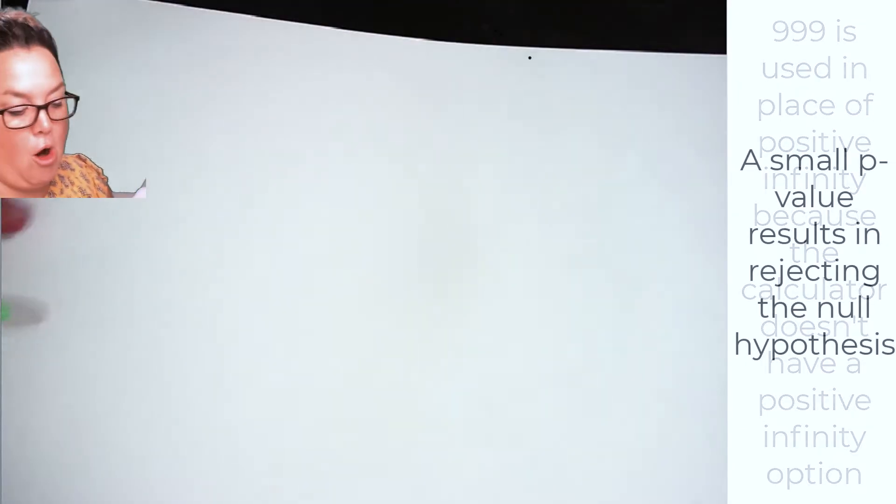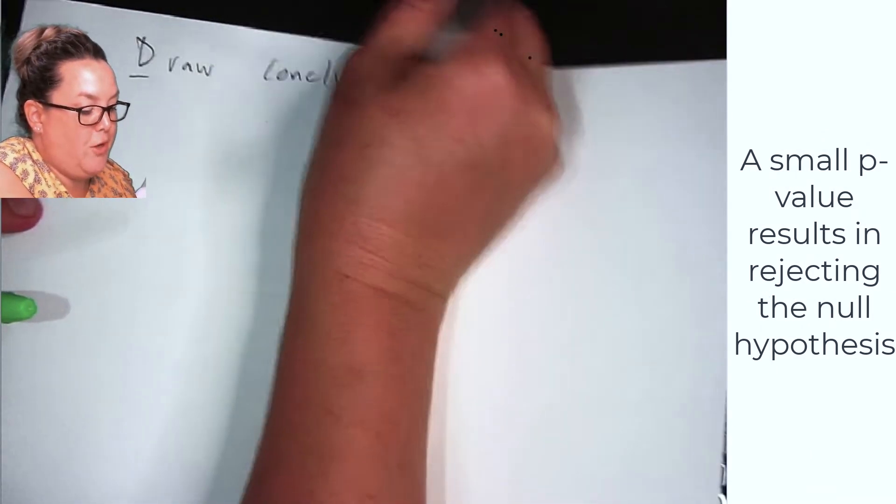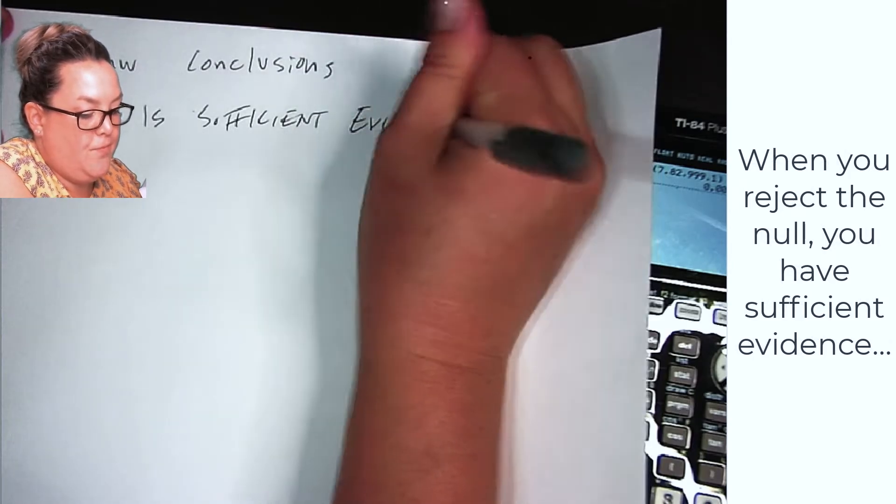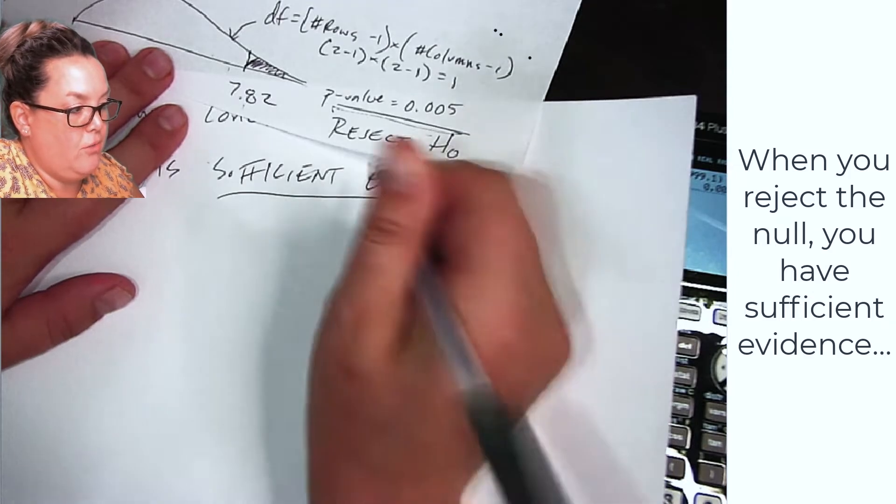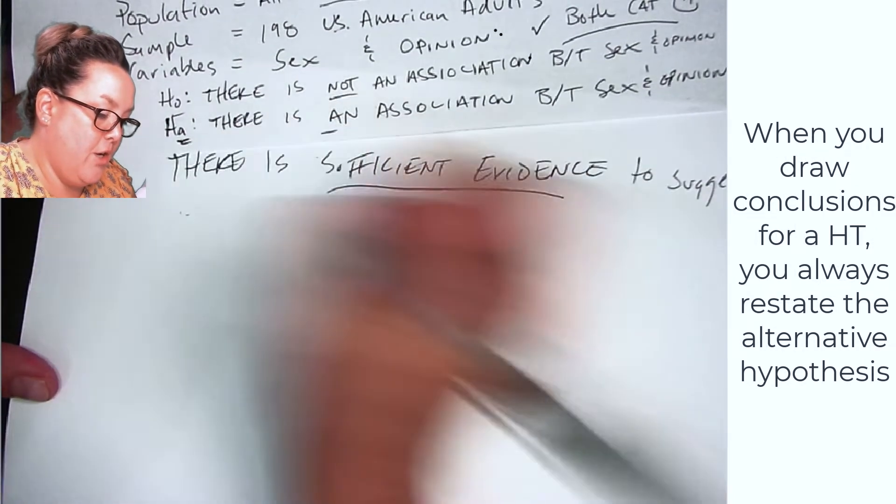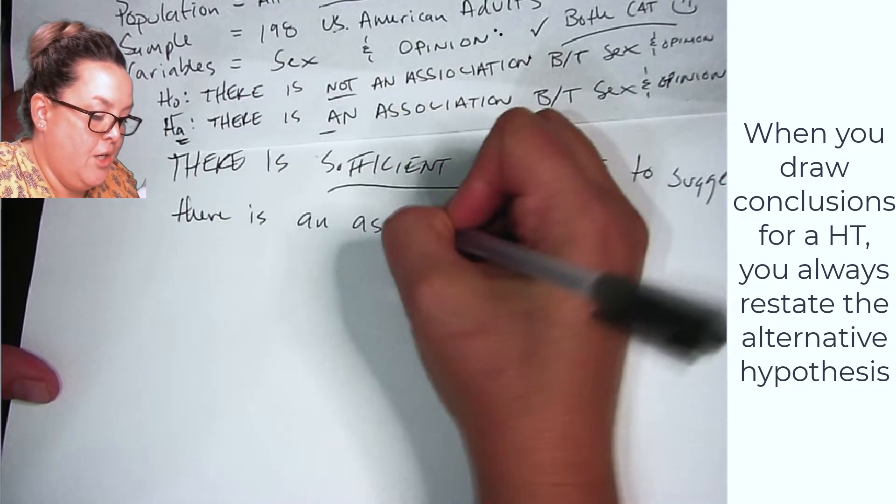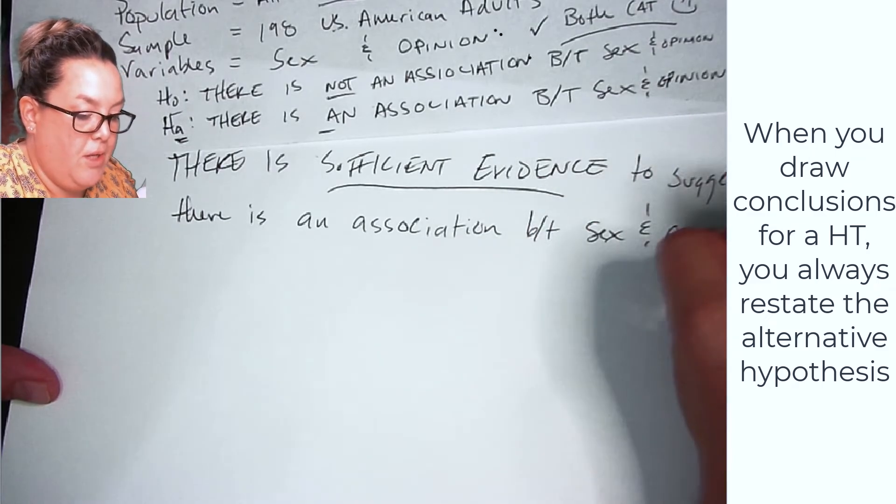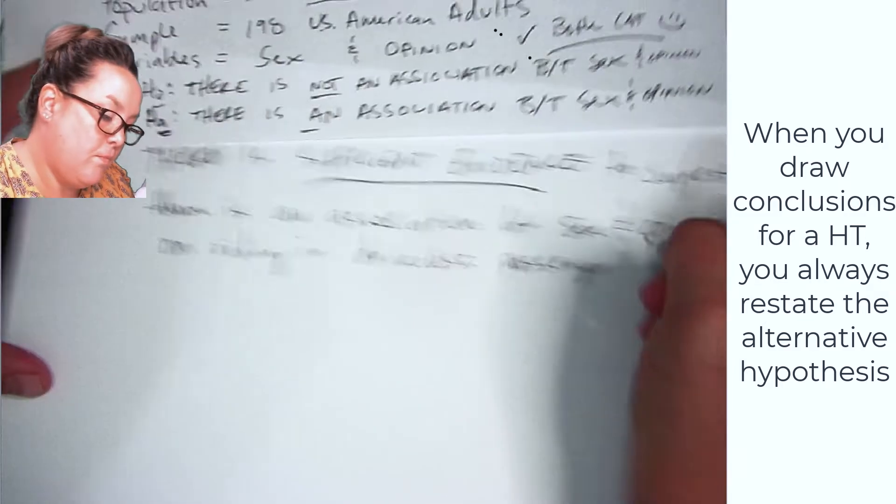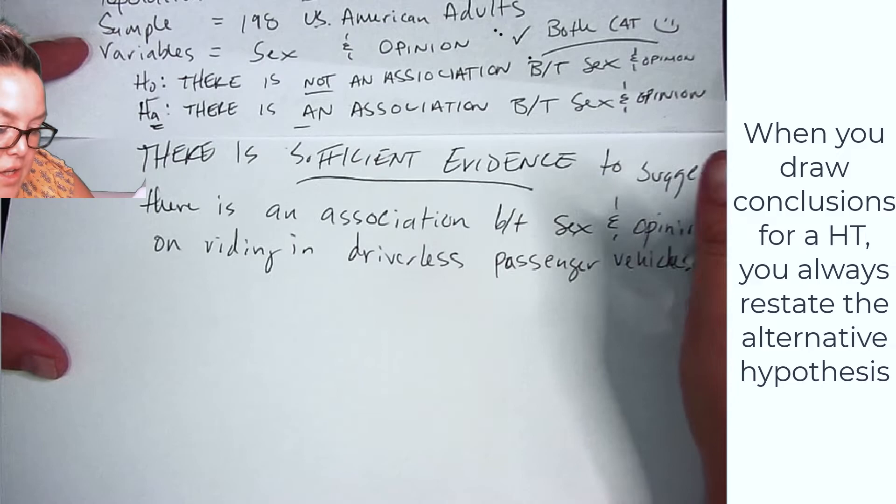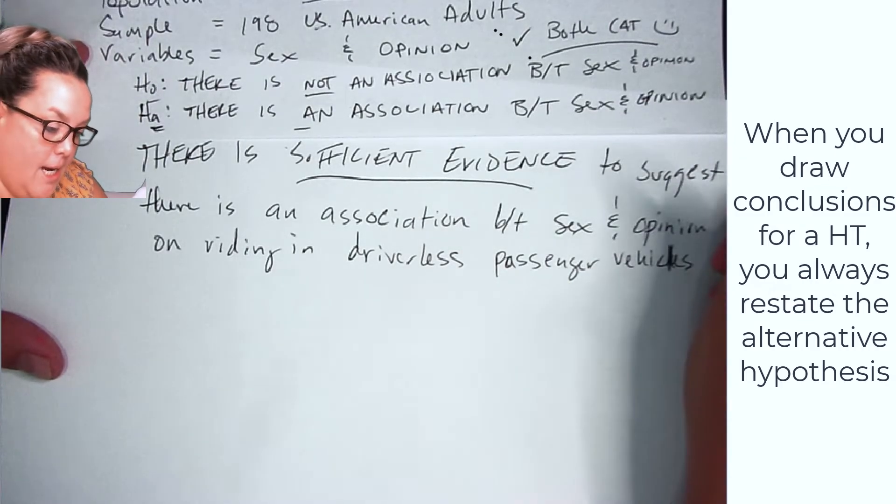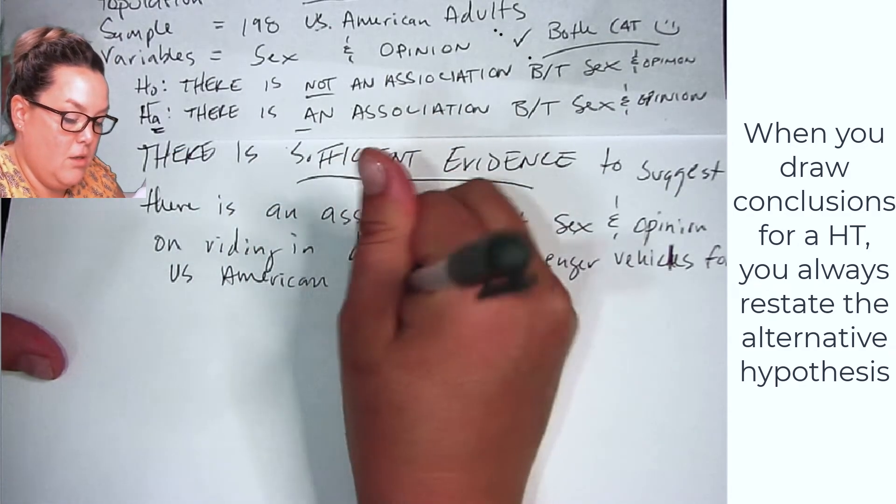So the next thing that we can do is drawing conclusions. That's our D in Fred, so draw conclusions. So because we rejected, we would say there is sufficient evidence. And again, this corresponds to when you reject. These always go together. So reject and sufficient. To suggest. And then we're going to restate our alternative. That's always what you do when you draw conclusions. So if you remember, our alternative was there is an association. So there's sufficient evidence to suggest there is an association between sex and opinion. And I'm going to be more specific about riding in driverless passenger vehicles. For US American adults.